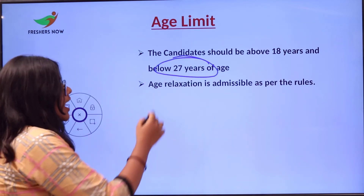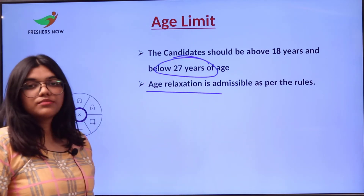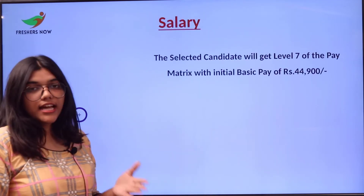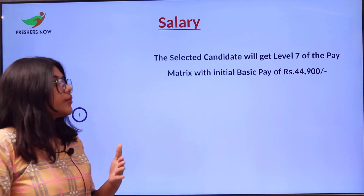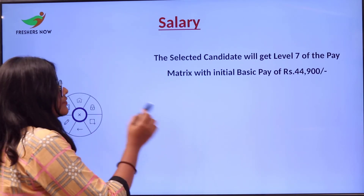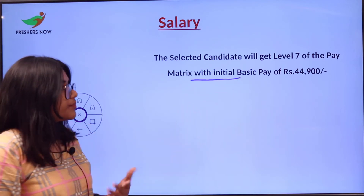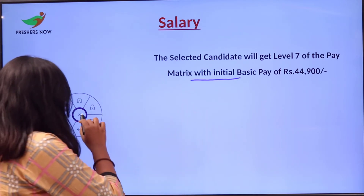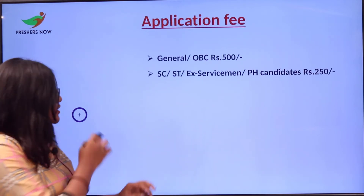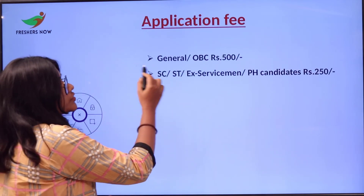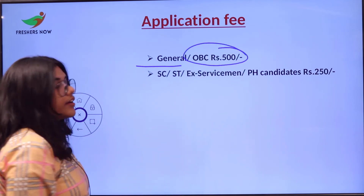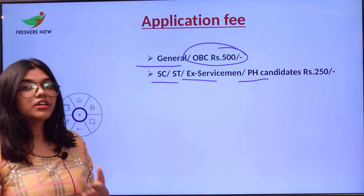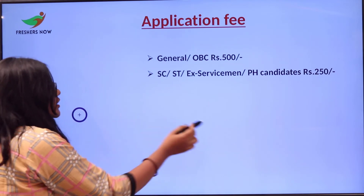Regarding the pay scale, selected candidates will be placed at Level 7 in the Pay Matrix, with an initial pay of rupees 44,900. Regarding application fees: for candidates belonging to General or OBC categories, the fee is rupees 500. For SC, ST, Ex-Servicemen, and PH candidates, the fee is rupees 250.